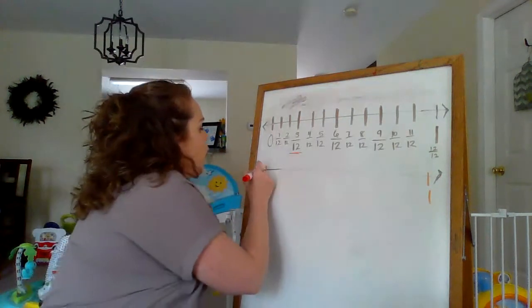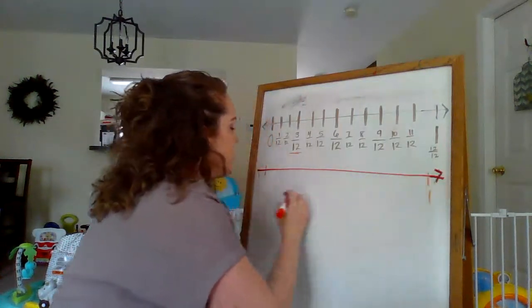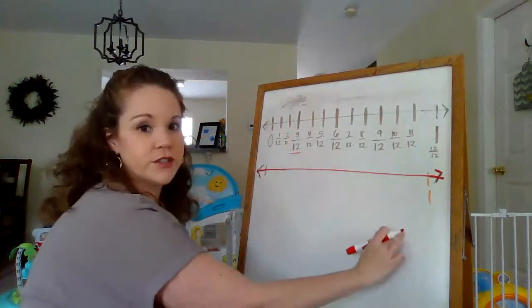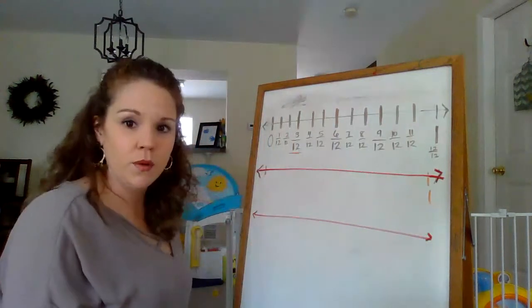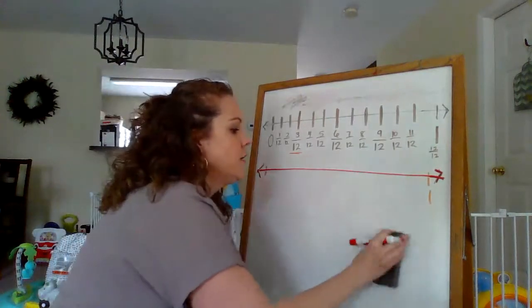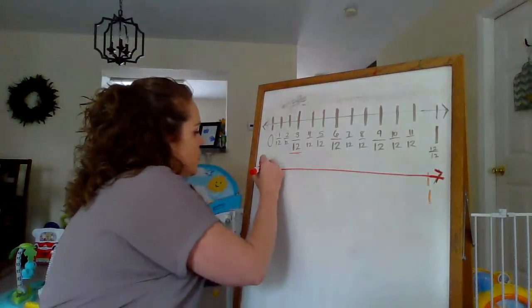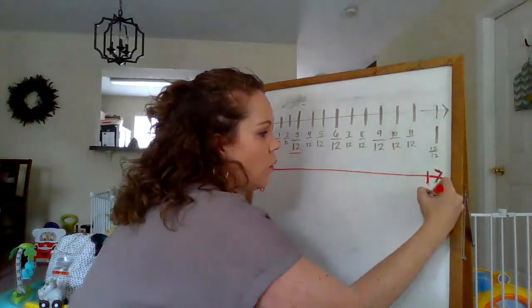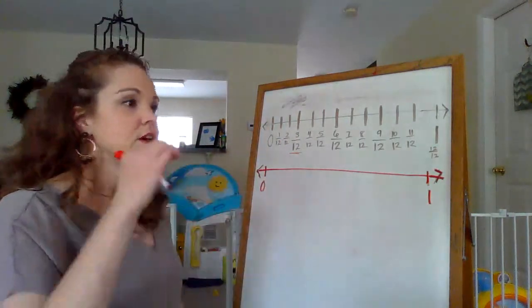Or if you were doing on paper and pencil, you can just draw another number line underneath of that, like down here, underneath of the one we just did. I'm going to keep mine up here though, so you guys can see a little bit better. All right. So if we are in six, that means we need to take from 0 to 1 whole and split it into six equal parts.